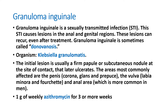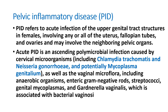Another important infection is granuloma inguinale or donovanosis, produced by Klebsiella granulomatis. It can produce anal and genital lesions and can recur. The initial lesion is usually a firm papule or subcutaneous nodule at the site of contact, which then ulcerates. It is mostly seen on the penis, vulva, or anal area. The treatment of choice is azithromycin 1 gram weekly for three or more weeks.